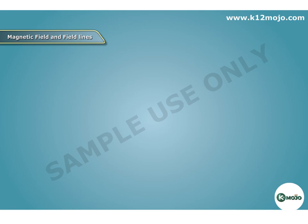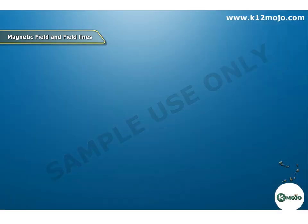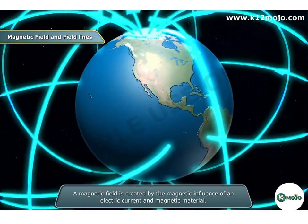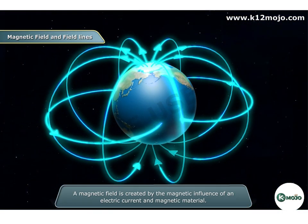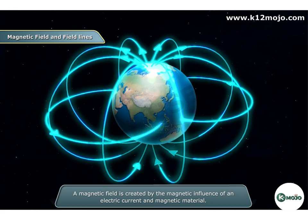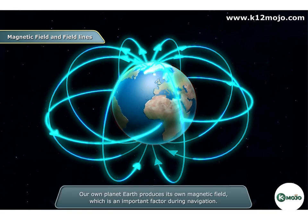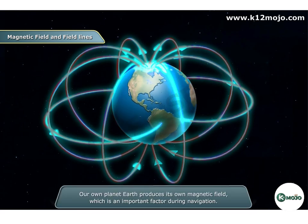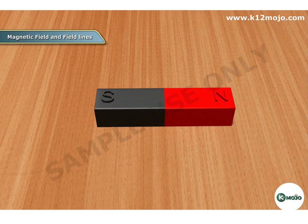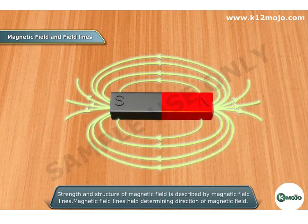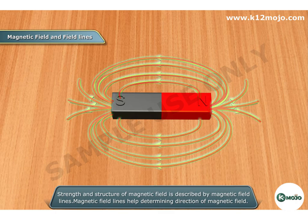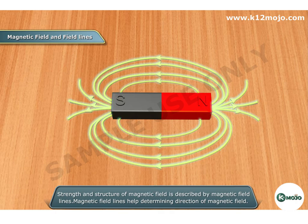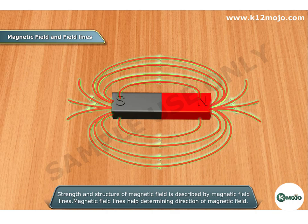A magnetic field is created by the magnetic influence of an electric current and magnetic material. Our own planet Earth produces its own magnetic field, which is an important factor during navigation. The strength and structure of a magnetic field is described by magnetic field lines, which help in determining the direction of the magnetic field.